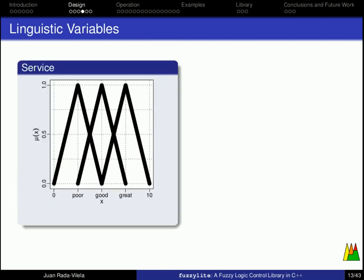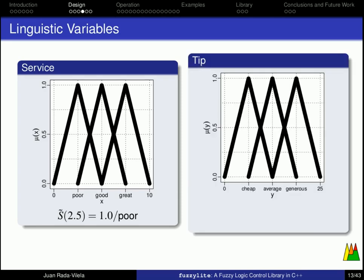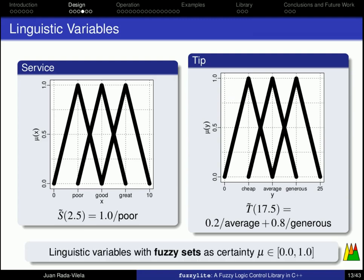Now, if we add another dimension, and we call it membership function, then we can better define the linguistic variables with different degrees of certainty, that goes between 0 and 1. Thus, for example, for an x value of 2.5, we now say that the associated term is poor with 1.0. Likewise, we define the membership functions for the tip, and to make it more interesting, consider a value of y equals to 17.5. Then we say that the associated term is 0.2 average and 0.8 generous. These are linguistic variables with fuzzy sets, which allow to represent much more information using membership functions, whose values are between 0 and 1.